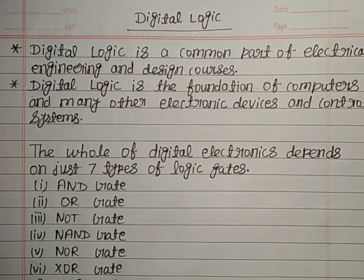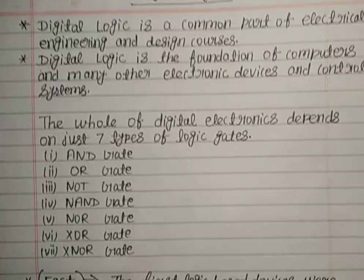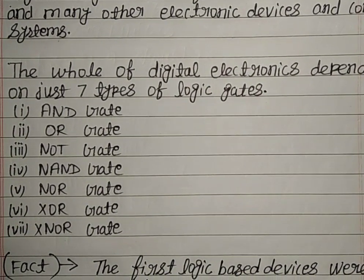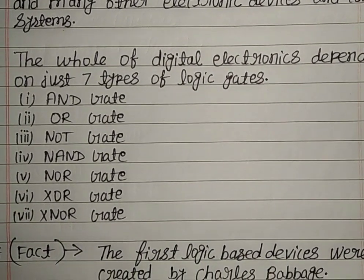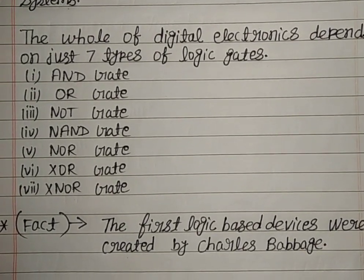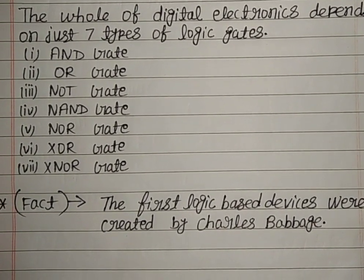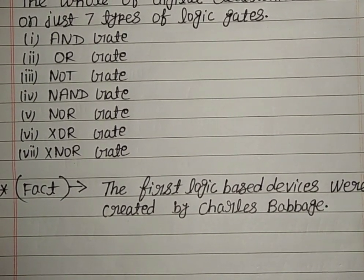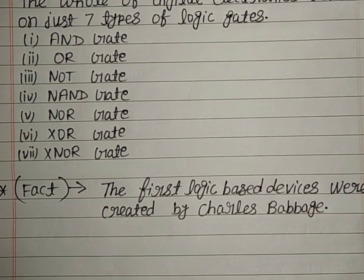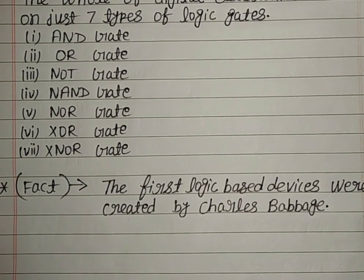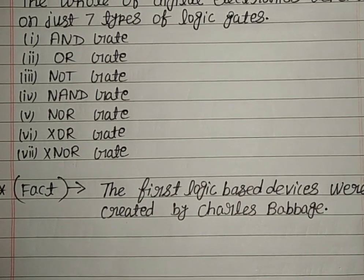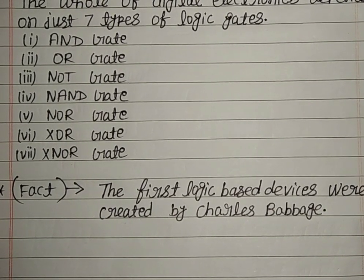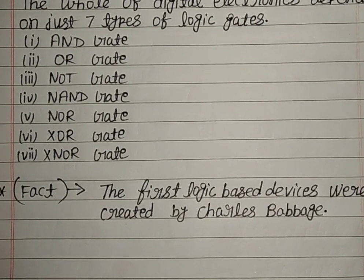Digital logic is the foundation of computers and many other electronic devices and control systems. This means that digital logic is in all electronic devices and control systems. Without digital electronics of these devices, there is no function. Digital logic has seven logic gates.